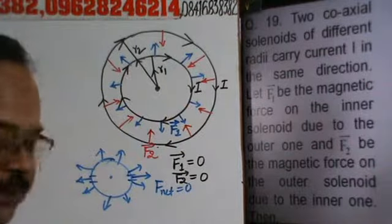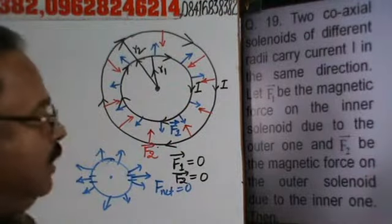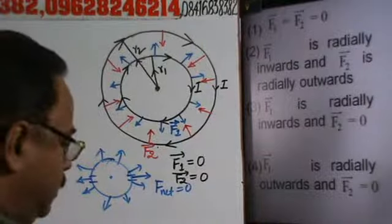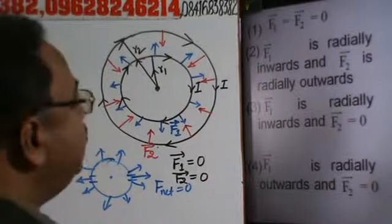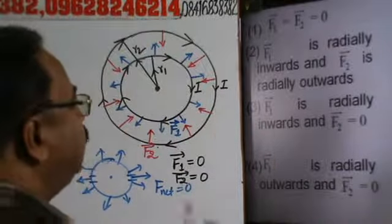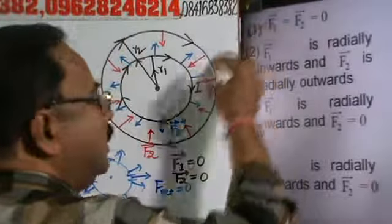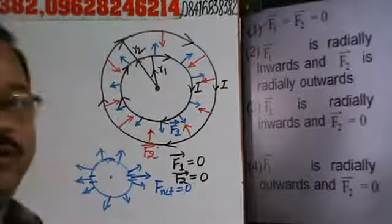Therefore, the correct option is option number 1: vector F1 is equal to vector F2 is equal to 0.